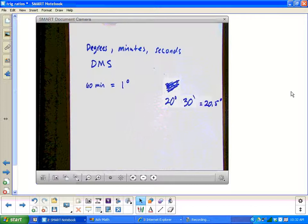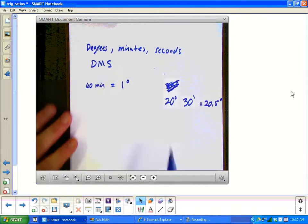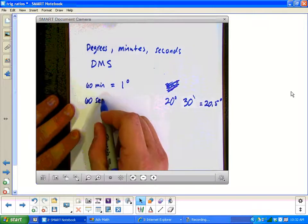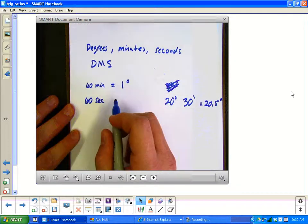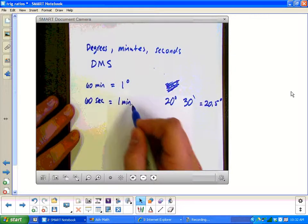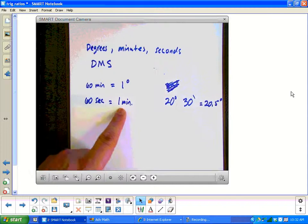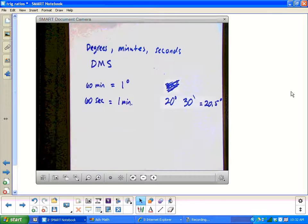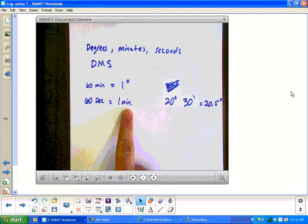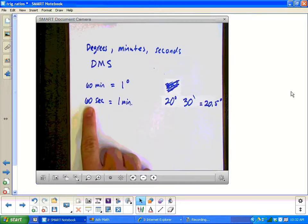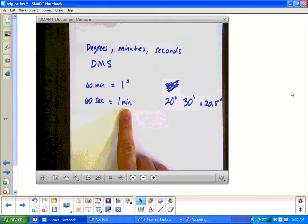Because 30 minutes is a half a degree. Now when it comes to seconds, there are, just like time here, 60 seconds in one minute. So a second is a part of a minute. So if I was talking about, say, 30 seconds, that would be half of a minute, 0.5 of a minute.